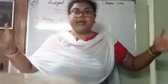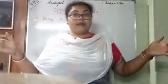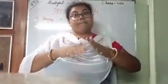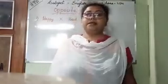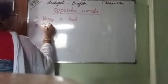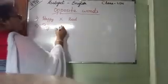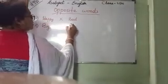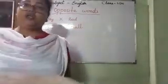Okay. Number two. Big — this much big. Small. Big. Small. What is the spelling of big? B-I-G. Number two is B-I-G. Big. What is the opposite of big? Small. S-M-A-L-L. Small.